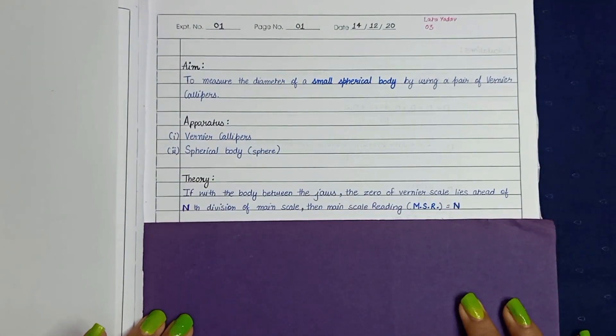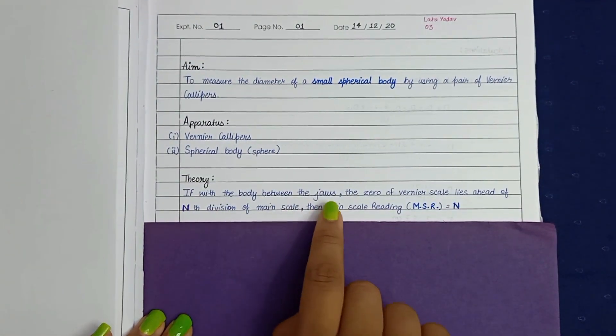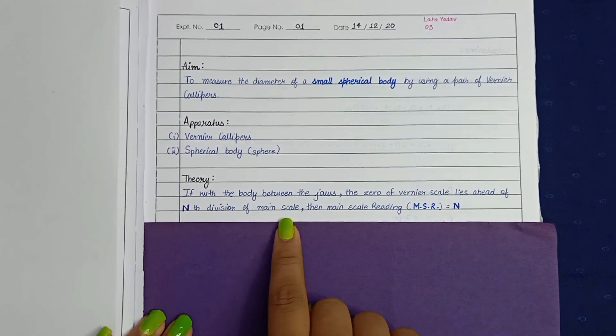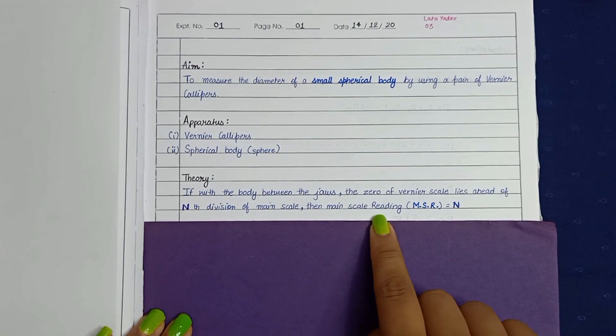Now coming to the theory portion. If with the body between the jaws, the zero of vernier scale lies ahead of nth division of main scale, then the reading of main scale is N.